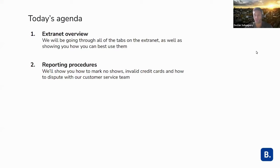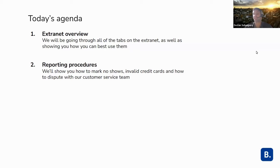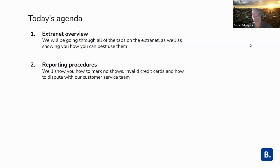So for today's agenda, we're going to be taking you through the whole extranet — just an overview of all the tabs and how you can use them. Then we'll be looking at some reporting procedures and showing you how to mark no-shows and invalid credit cards, and how to dispute with our customer service team. But let's get into the extranet first.